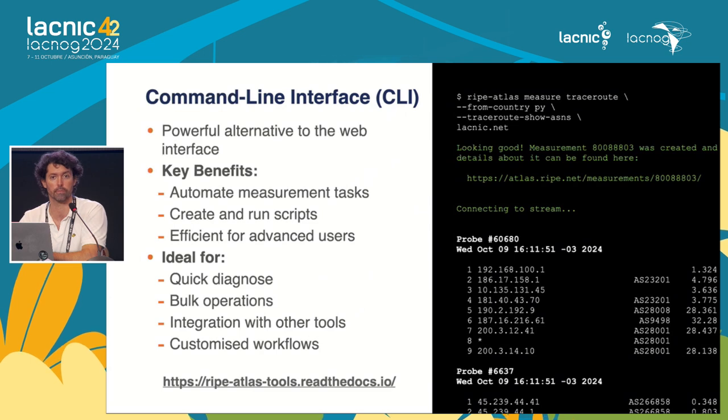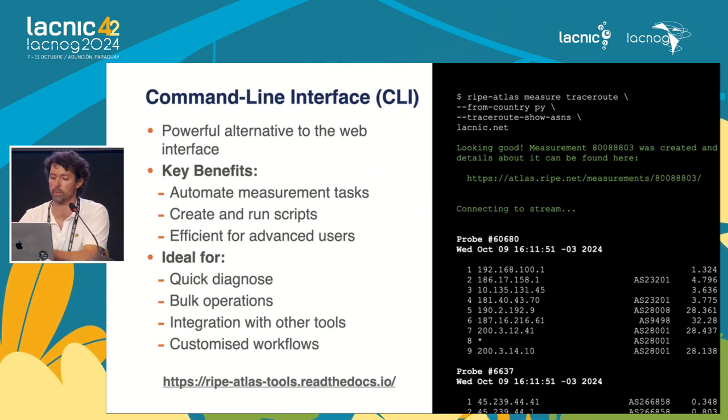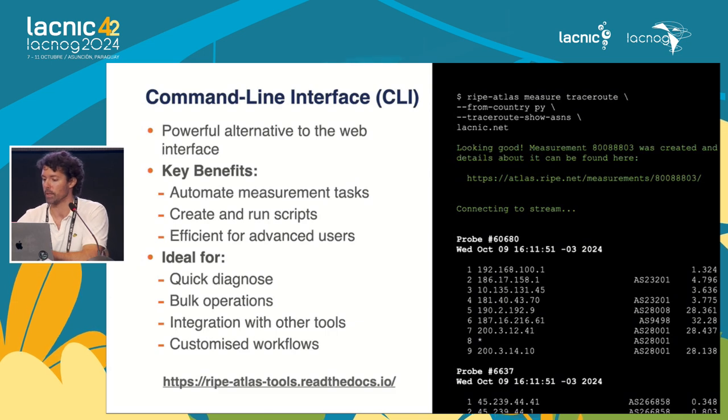Now let's go to the command line interface. This is mostly for operators — power users who want to do everything with their keyboard in one place. This tool is very useful for quick diagnosis: when there is an alert and panels are in red, with a tool like this you can identify the root cause in just a few steps. This is an example of a traceroute from Paraguay — you can see the traces as you would in traceroute, the autonomous systems it goes through, and more information in the link at the bottom.